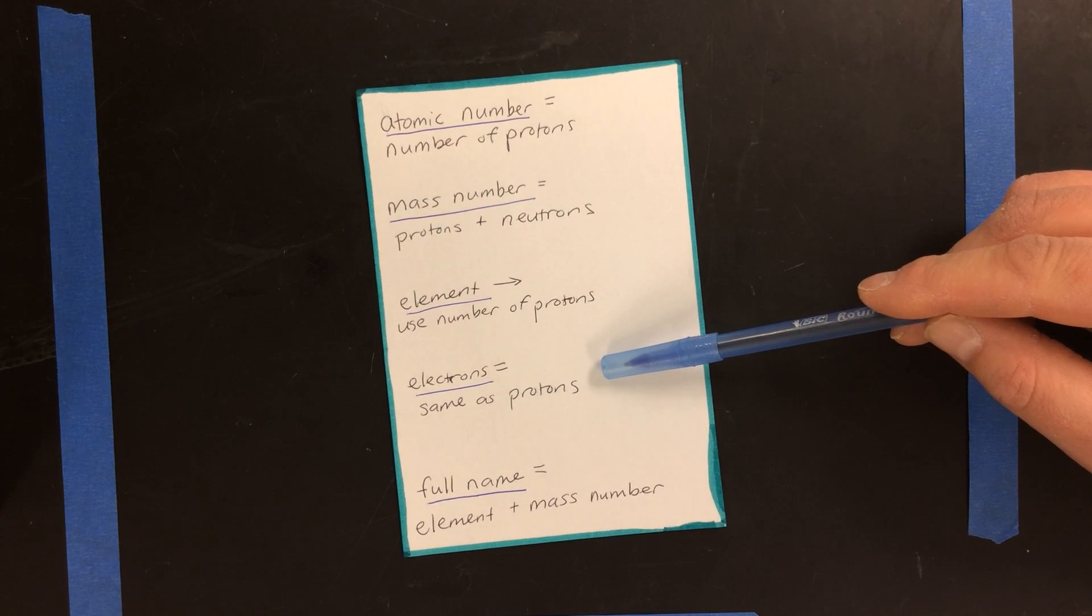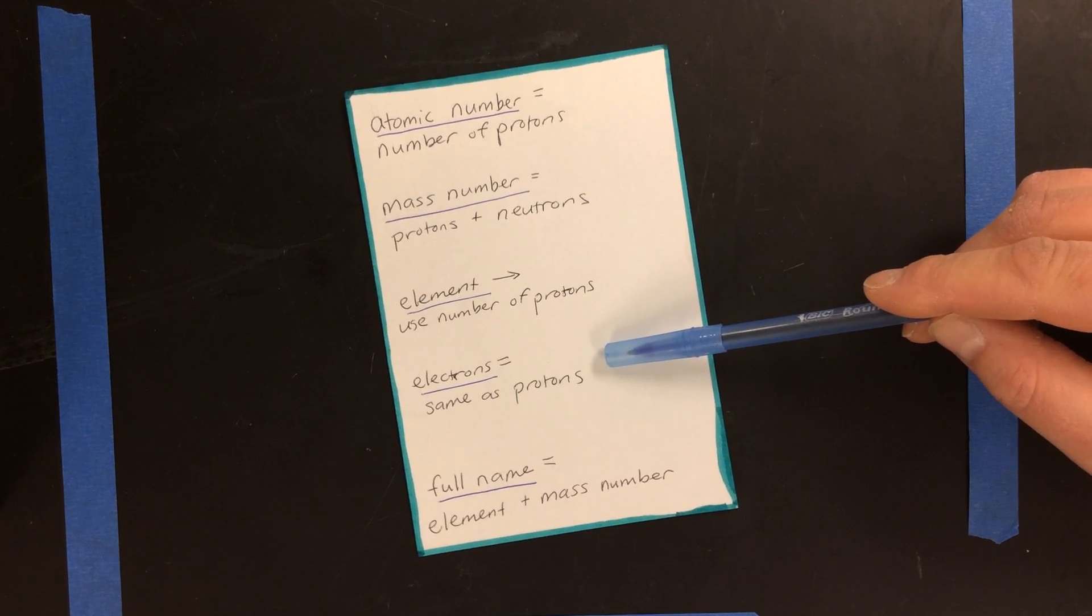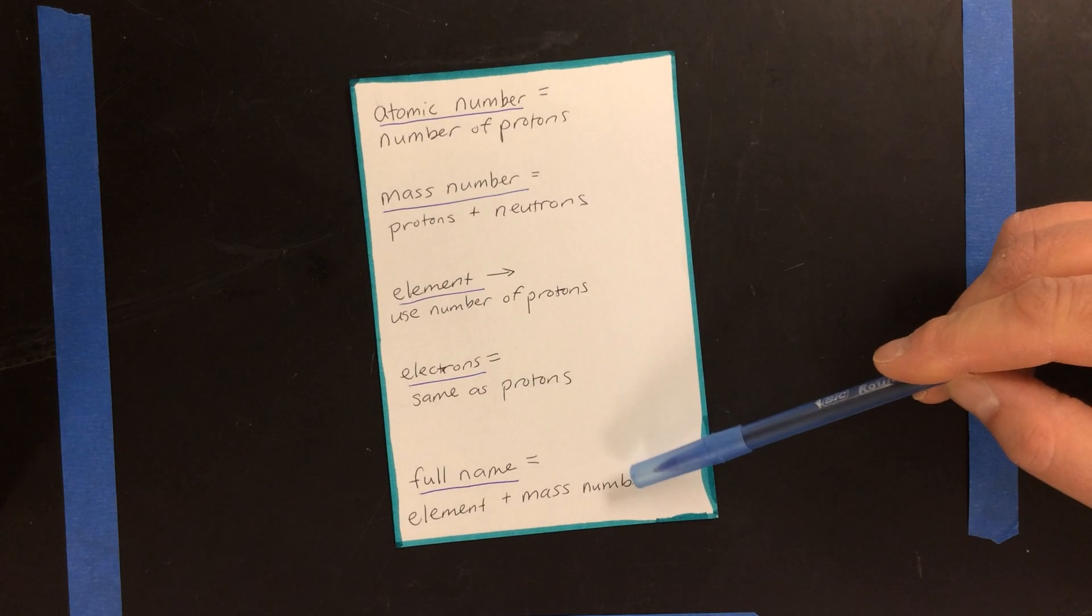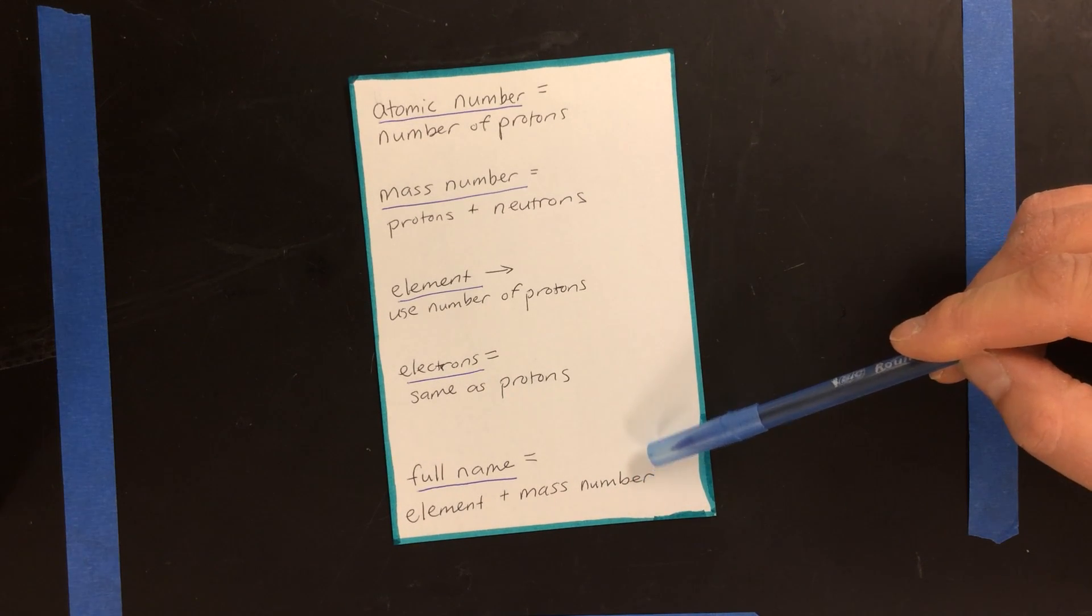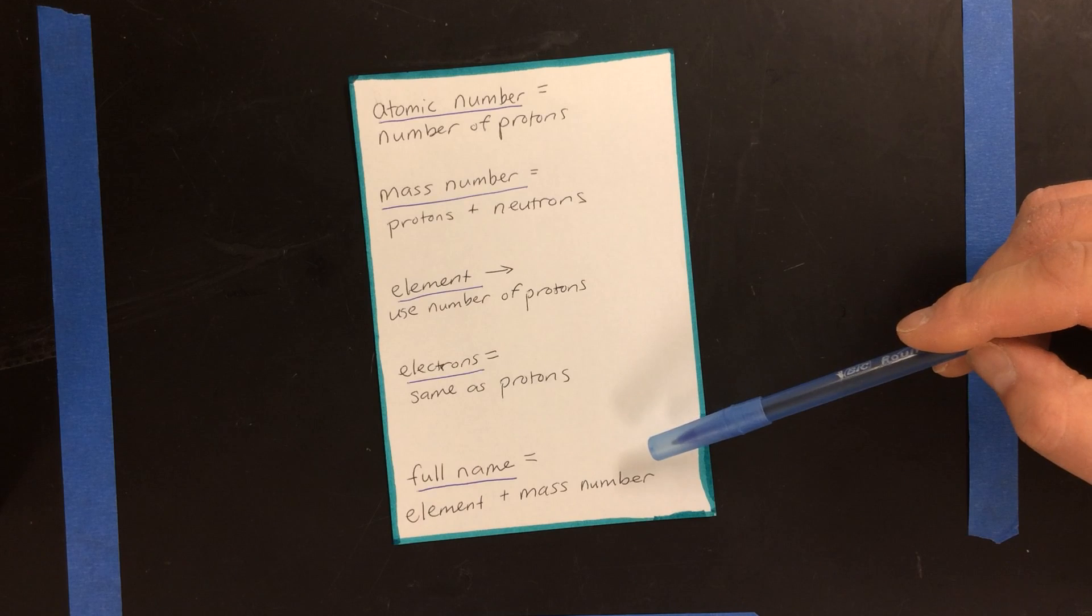We've learned that the electrons start with the same number as the number of protons. And finally, we know that the full name of an atom requires you to know the element and the mass number.